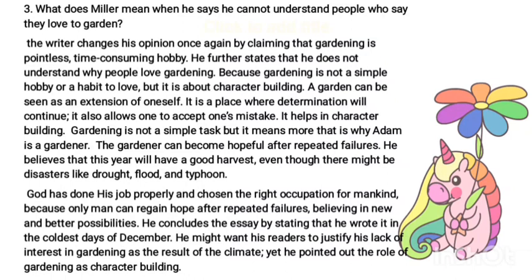What does Miller mean when he says he cannot understand people who say they love to garden? The writer changes his opinions once again by claiming that gardening is a pointless, time-consuming hobby. He further states that he does not understand why people love gardening, because gardening is not a simple hobby or habit to love — it is about character building. A garden can be seen as an extension of oneself. It is a place where determination will continue, and it also allows one to accept one's mistakes. It helps in character building.